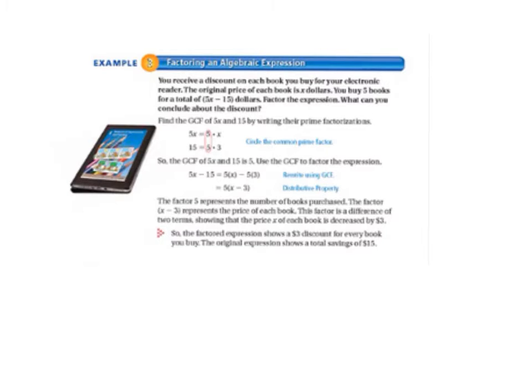When we did that, we circled the common prime factor, and it was 5. The greatest common factor of 5x and 15 is 5. And it says use the greatest common factor to factor the expression.